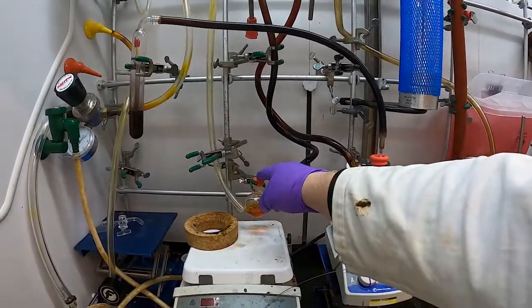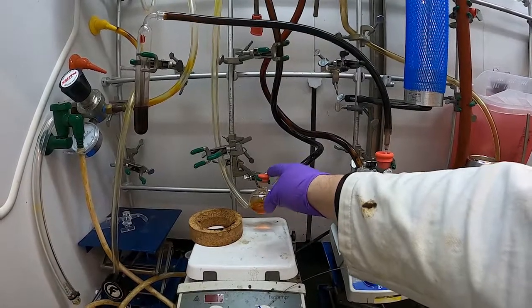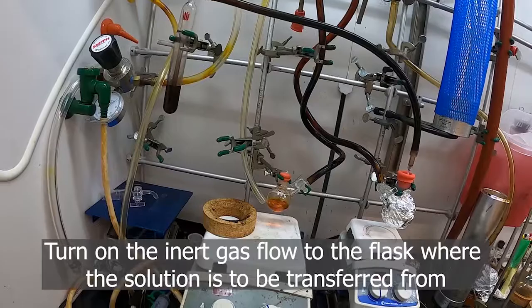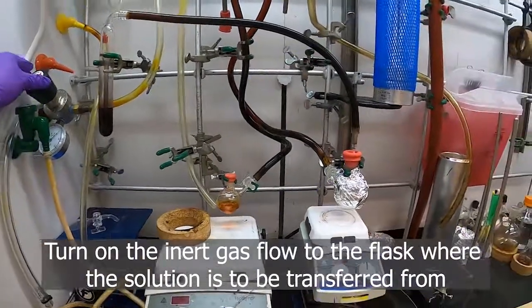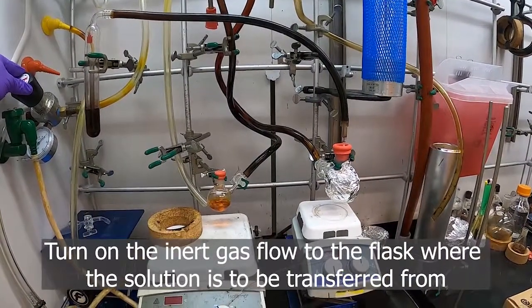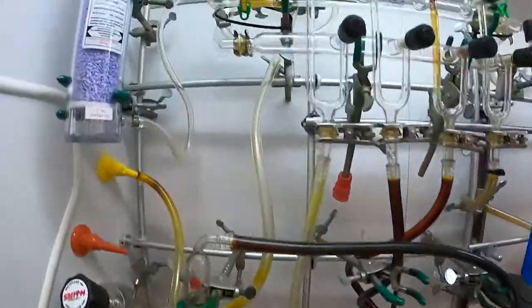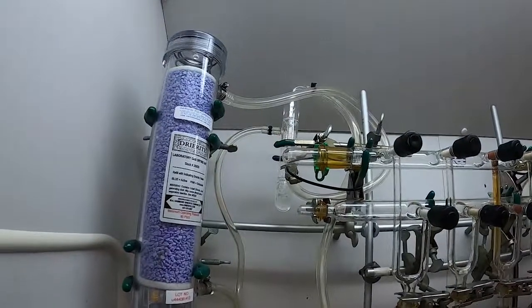Next thing we'll do is make sure that the flask where things are coming out of has nitrogen flow to it. So we'll turn on the nitrogen for that, and we've got a flow like that.